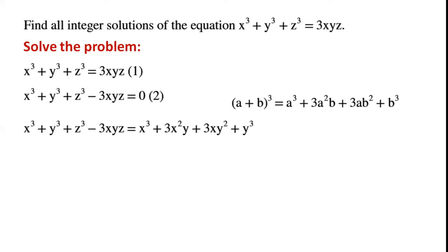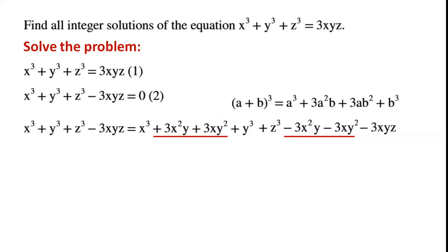So we add 3x squared y plus 3xy squared. z cubed is already there. As we added these two terms, we also take away these two terms. Minus 3xyz is already there.